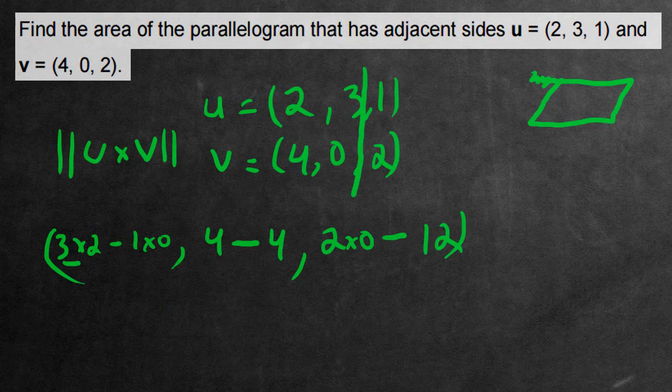Let's simplify it now. 3 times 2 is 6. Subtract 1 times 0. So 1 times 0 is 0. Which means overall, this is going to be 6, comma, 4 subtract 4 is 0, comma, 2 times 0 is 0. Then we have negative 12. So this is the orthogonal vector we're going to be working with.